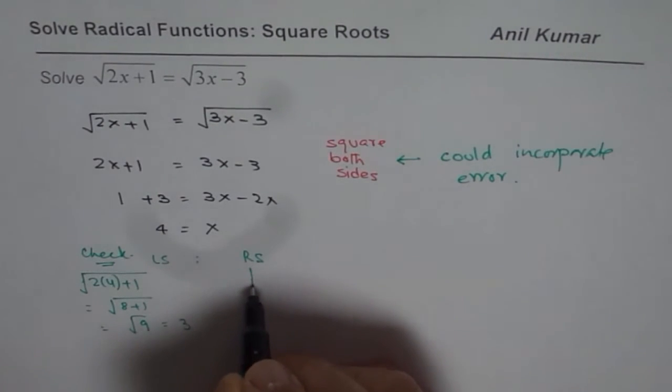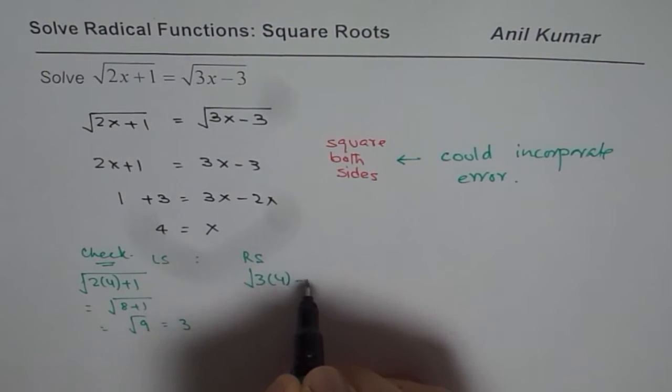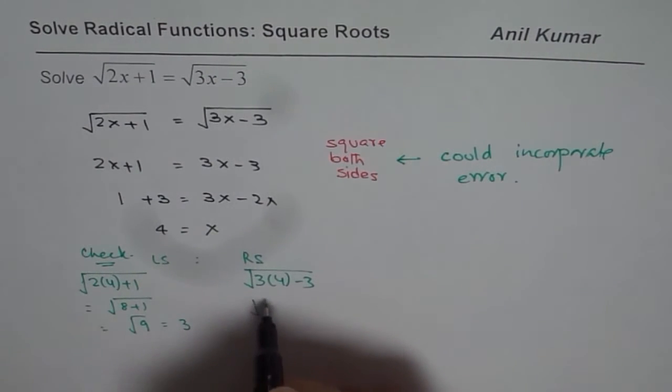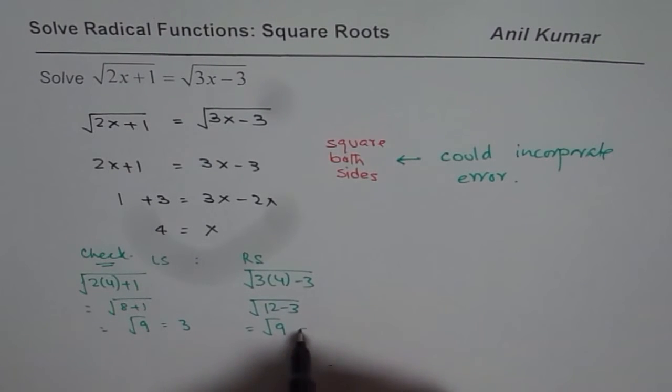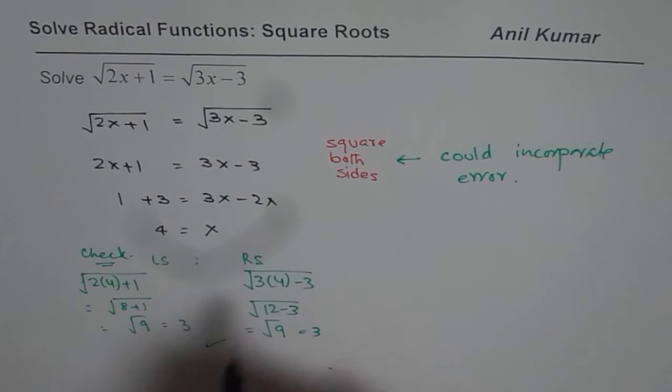On the right side, we have square root of 3 times 4 minus 3, which is 12 minus 3, or equals square root of 9, which is also 3. So that is correct. Both are equal.